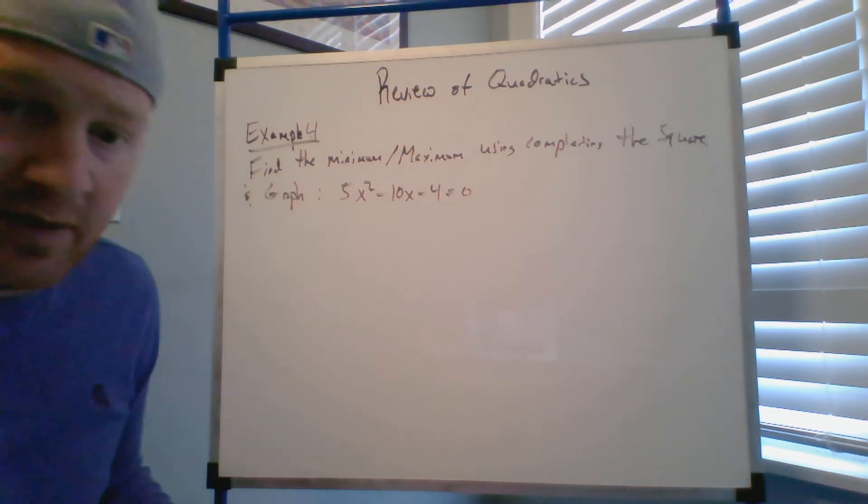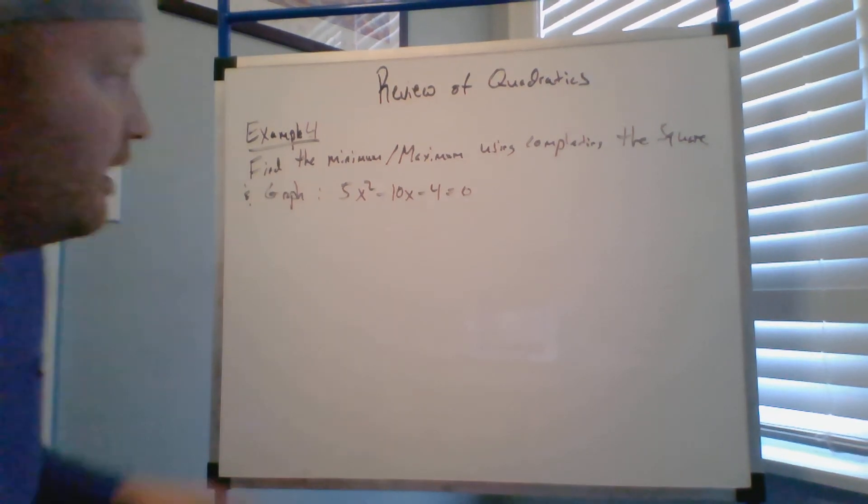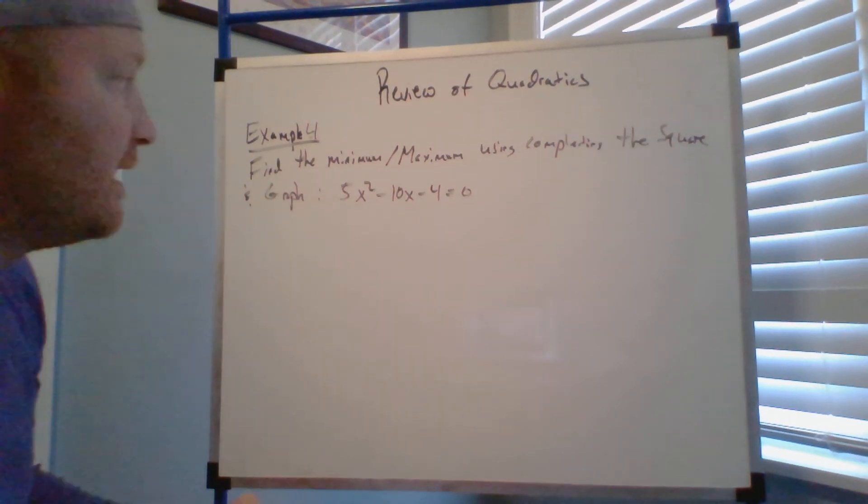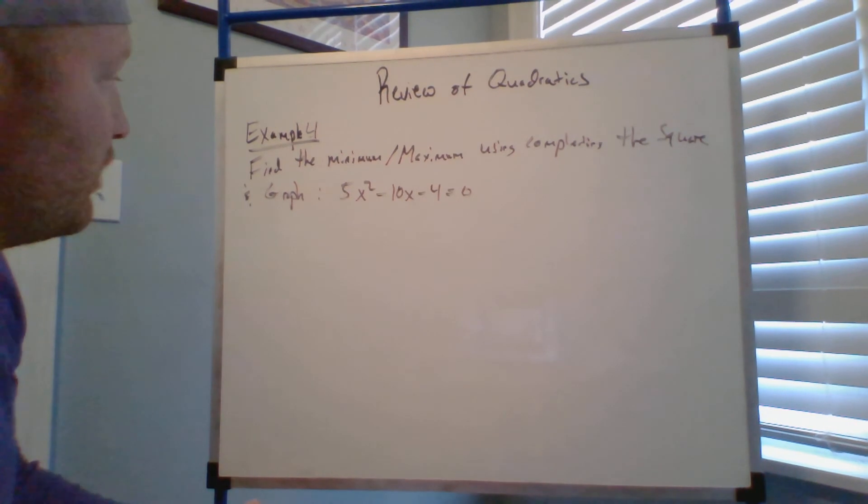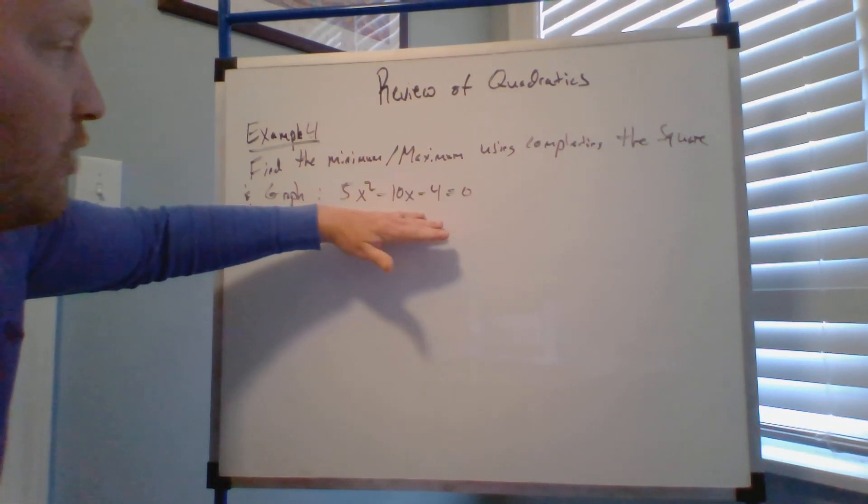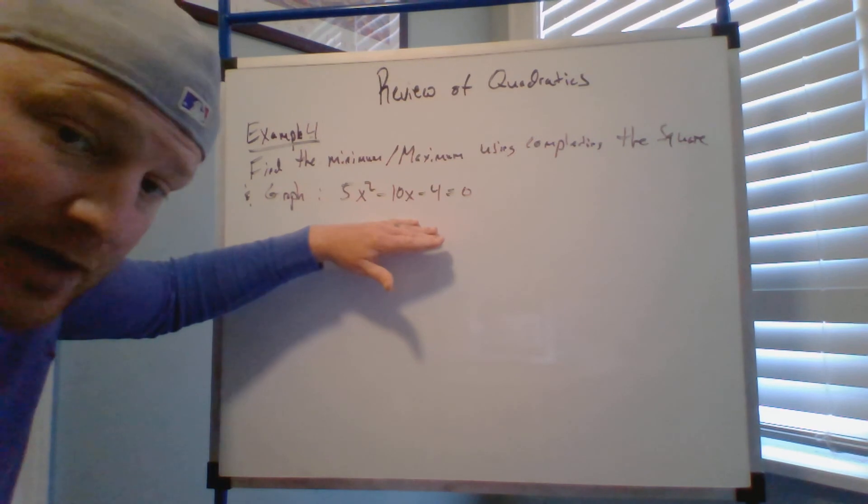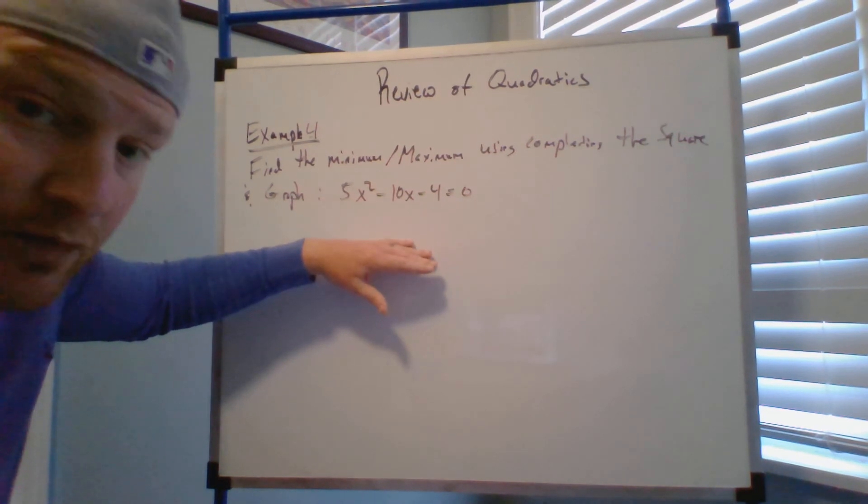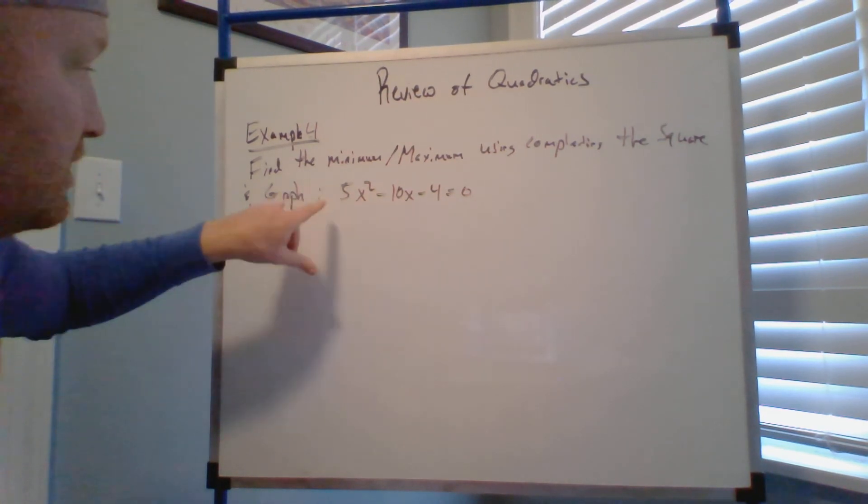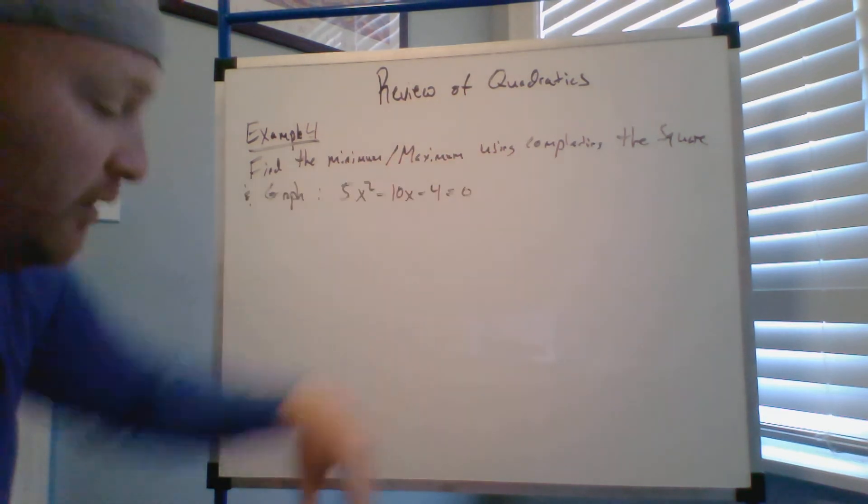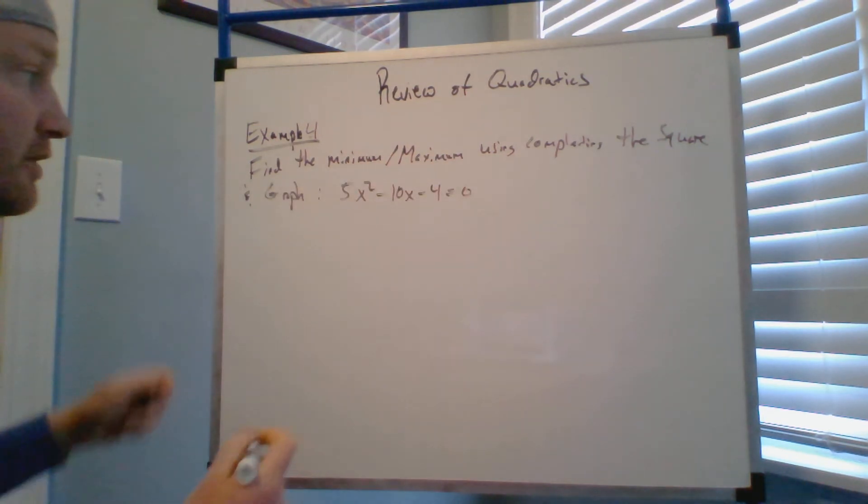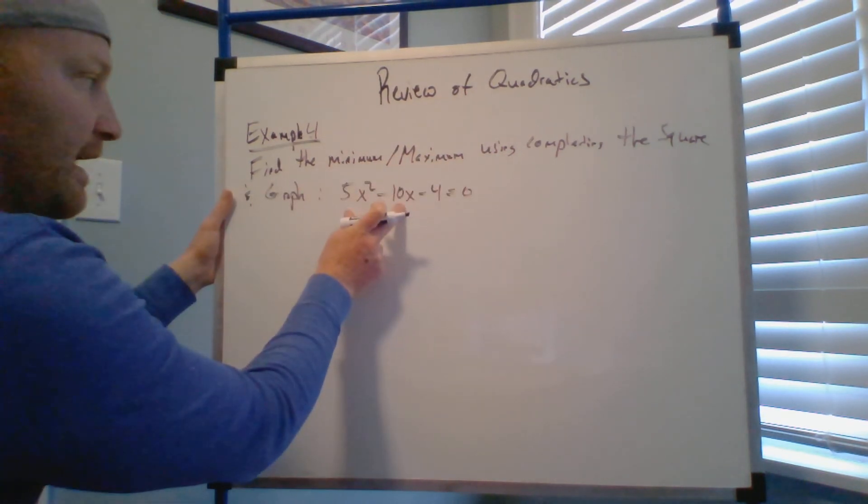All right, this is going to be my last example for today. This is find the minimum maximum using completing the square and then graph. So that means we're going to find the vertex and then we're going to find the solutions, and then we're going to graph it all from using this concept of completing the square.